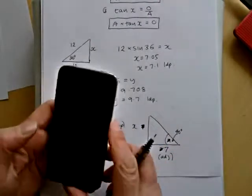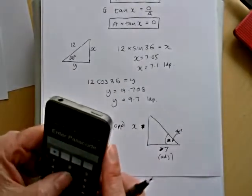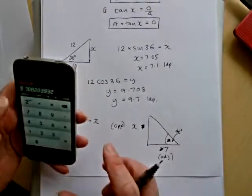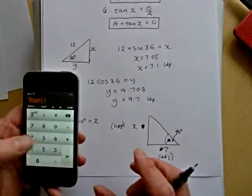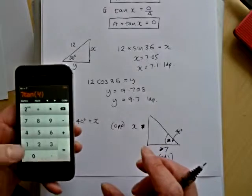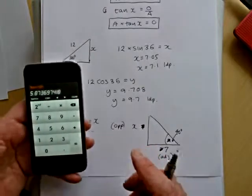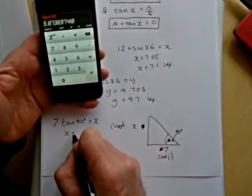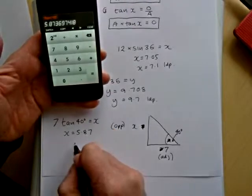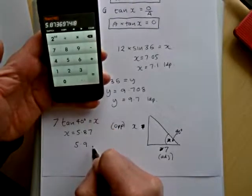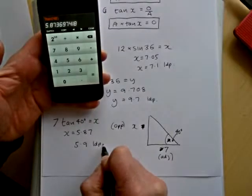Okay, so clear that. So 7 tan 40 equals, and we've got x equals 5.87. So we'll round that to one decimal place, 5.9.